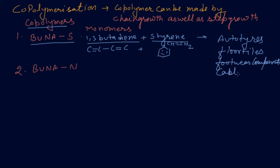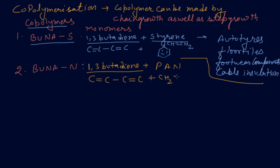The next one is BUNA-N: 1,3-butadiene, whose formula is C=C, with polyacrylonitrile CH2=CH-CN. You add them and get this monomer.